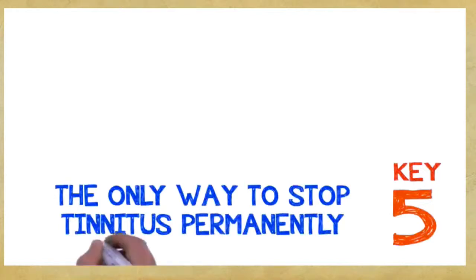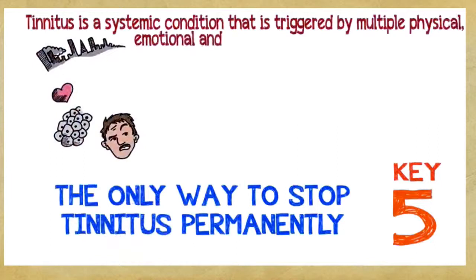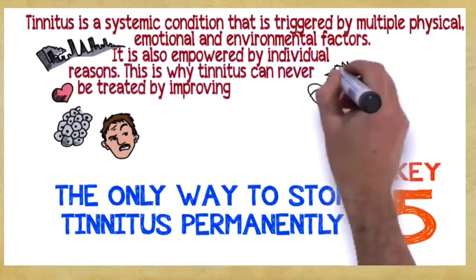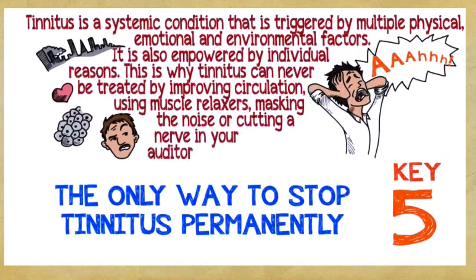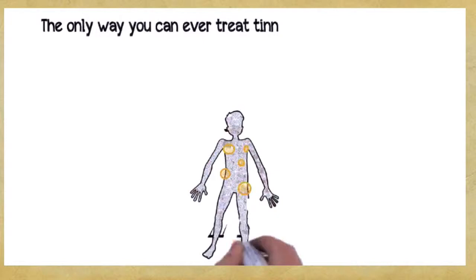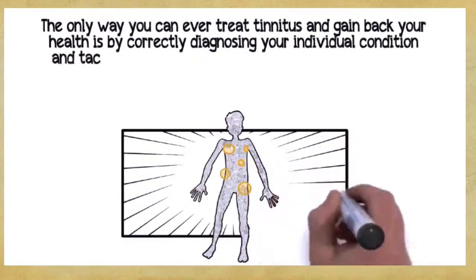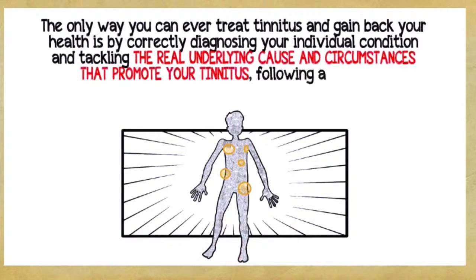Key number five. The only way to stop tinnitus permanently. Tinnitus is a systemic condition that is triggered by multiple physical, emotional, and environmental factors. It's also empowered by individual reasons. This is why tinnitus can never be treated by improving circulation, using muscle relaxers, masking the noise, or cutting a nerve in your auditory system. The only way you can ever treat tinnitus and gain back your health is by correctly diagnosing your individual condition and tackling the real underlying cause and circumstances that promote your tinnitus, following a complete, multi-dimensional, holistic program.